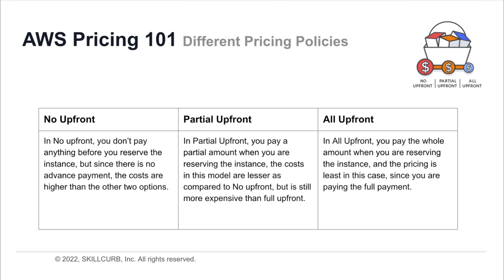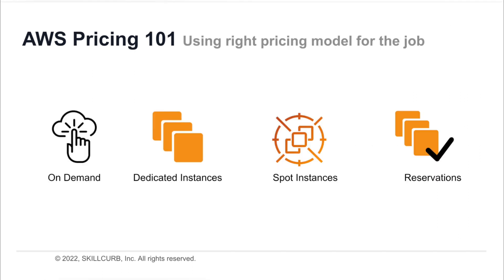For pay less when you reserve, the three pricing policies are: No upfront — you don't pay anything upfront before reserving the instance, but costs are higher than the other two options. Partial upfront — you pay a partial amount when reserving, and costs are less than no upfront but more expensive than full upfront. All upfront — you pay the whole amount when reserving the instance, and the pricing is the least it can possibly be.